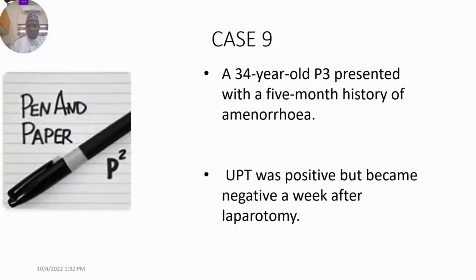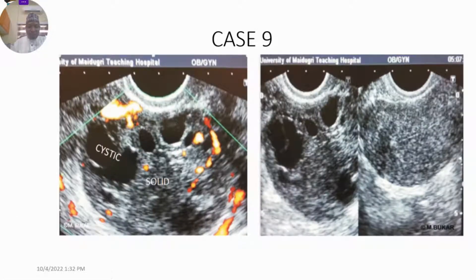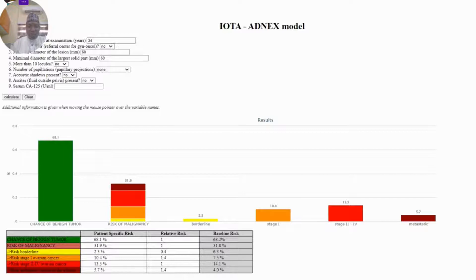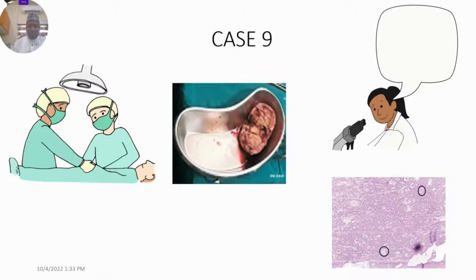Case 9 was a 34-year-old para 3 who presented with a 5-month history of amenorrhea. UPT was positive but became negative a week after presentation. The ultrasound showed a typical Swiss cheese appearance. We inputted all information and the model showed risk of benign and malignant lesions. Clinically it was stage 1 disease. She had surgery and the specimen showed Call-Exner bodies, confirming an adult granular cell tumor.